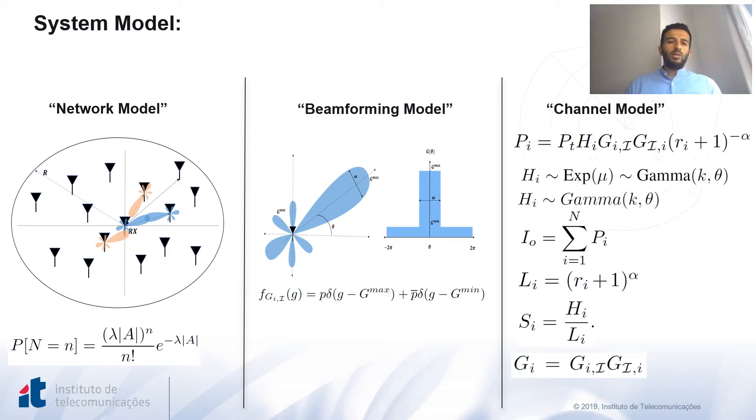Regarding the adopted system model in our work, we assume that the nodes are distributed according to a homogeneous Poisson point process with density lambda over a circular area with radius r. So the probability of having N nodes within the geographical area A is given by this probability mass function. We also condition on a reference receiver at the origin. The receiver will experience different interference sources except the connection with its typical transmitter. The goal here is to characterize the aggregate interference power seen at the reference receiver.